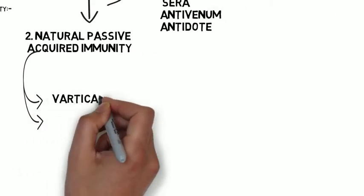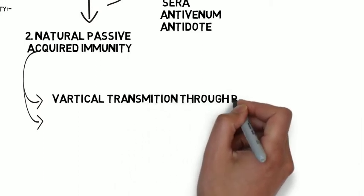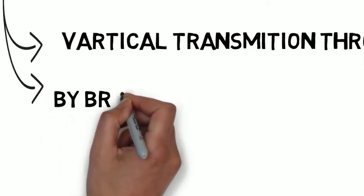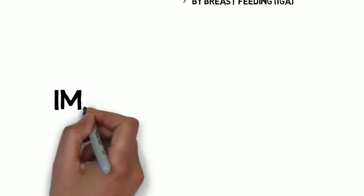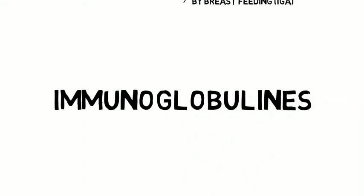Vertical natural passive immunity includes vertical transmission through placenta with IgG, and the next one is breastfeeding with IgA. In placenta IgG is present. Now let's look at immunoglobulins. The trick is AGM.